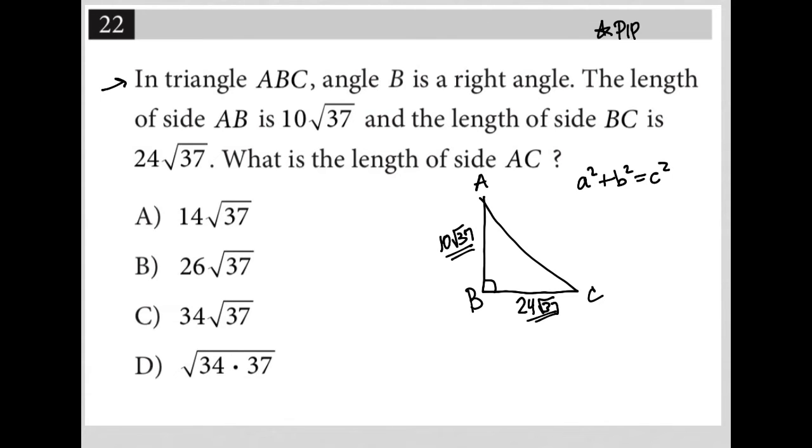So in this case, our A squared would be 10 root 37 squared plus our B squared would be 24 root 37 squared equals C squared. So 10 root 37 squared will be 10 squared, which is 100, times square root 37 squared, which is just 37, so 100 times 37,